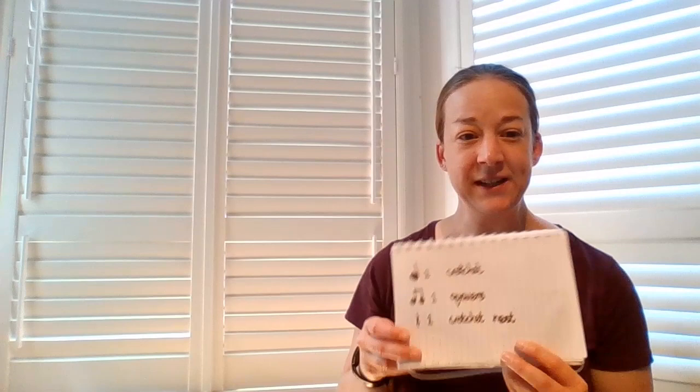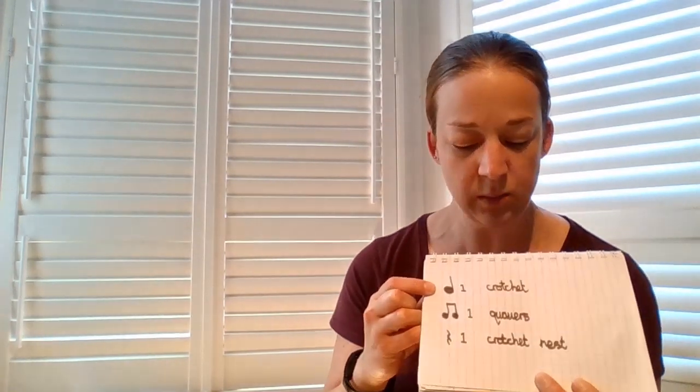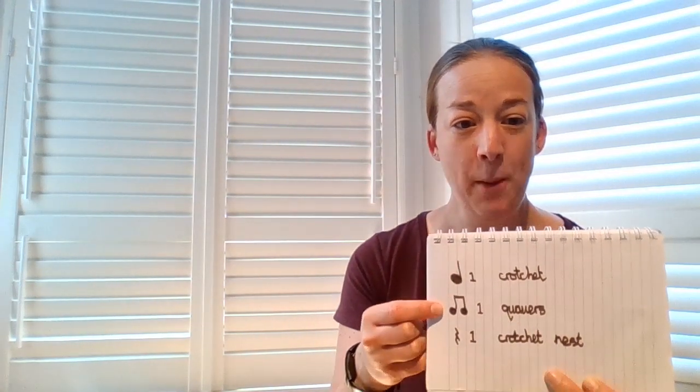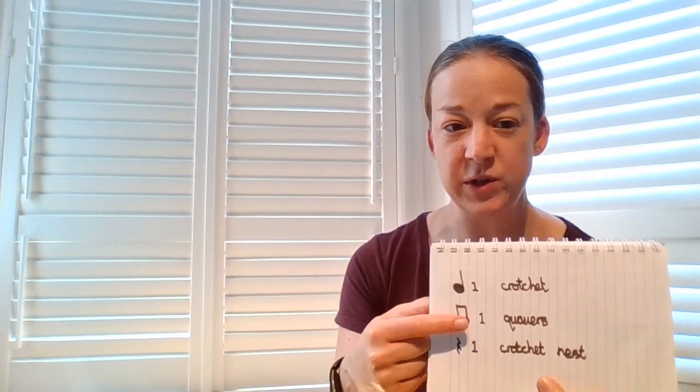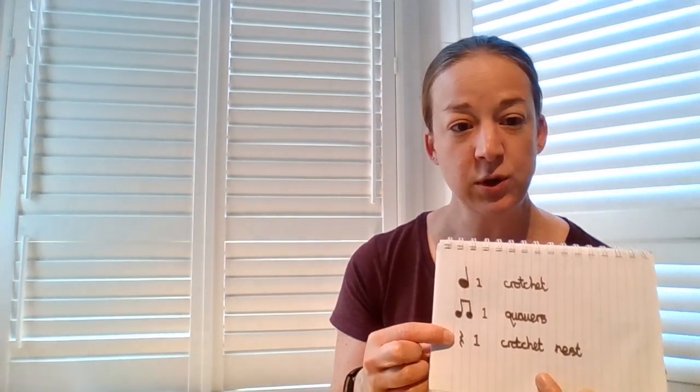We've got three different kinds of notes in this game today. So we've got our one beat note which is our crotchet, looks like that and the middle is all filled in. We've got our pair of half beat notes which makes another one beat together. Those are our quavers and we've also got our one beat crotchet rest. So that's our shush.